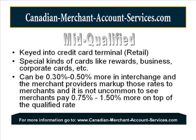Usually the interchange rate can be 3 to 5 basis points higher, and credit card processors will mark that up to you anywhere from 7 basis points right up to a full percent and a half on top of your normal qualified rate. For example, if you're quoted 1.75% on your qualified rate and you do a mid-qualified transaction, with 50 basis points higher in interchange you could end up paying 2.5% to 2.75% on that transaction.